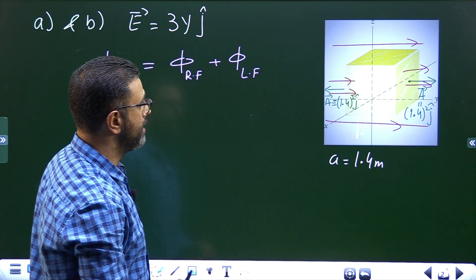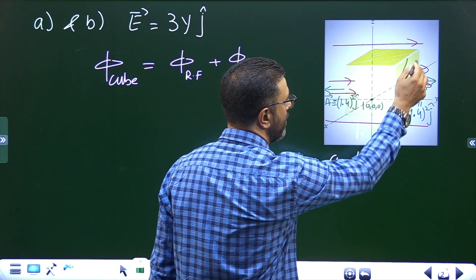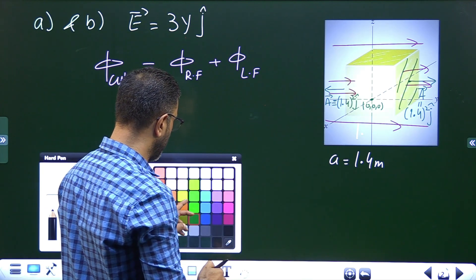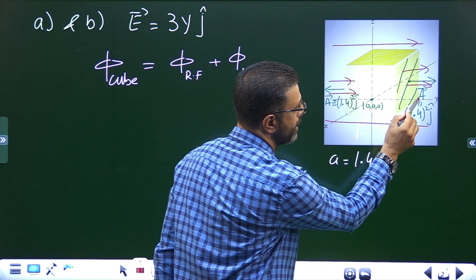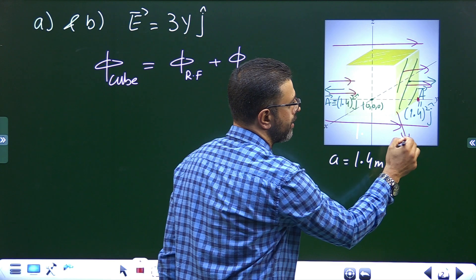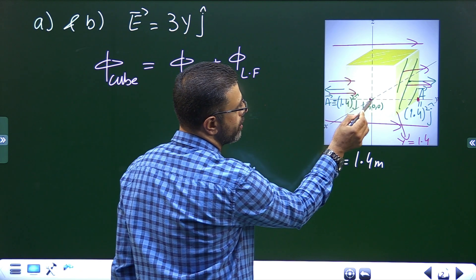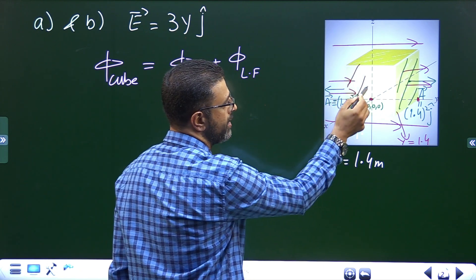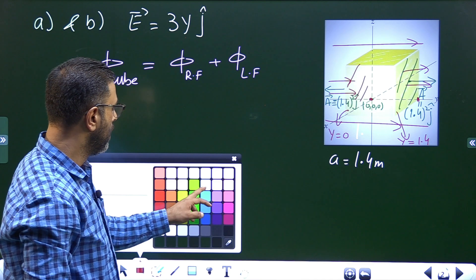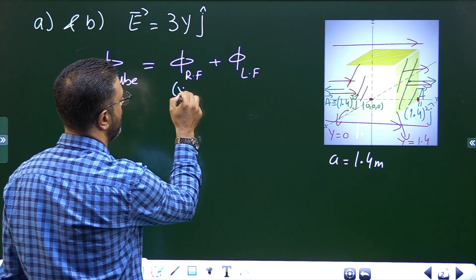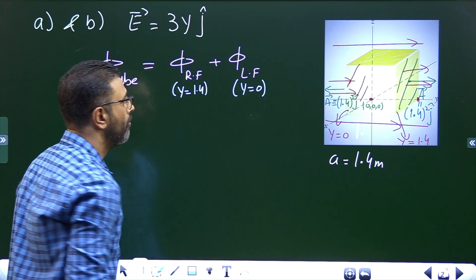One important point: the corner of the cube is at the origin (0, 0, 0). For the right face, the y-coordinate is 1.4, which equals the side length. For the left face, y is equal to 0. This is important because we need the y-value to evaluate the electric field E = 3yj on each face.